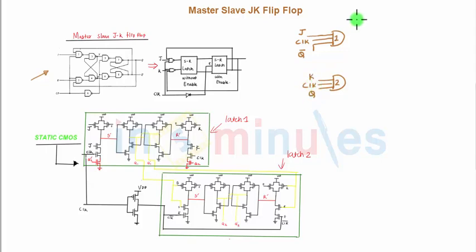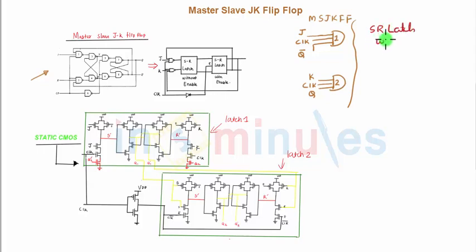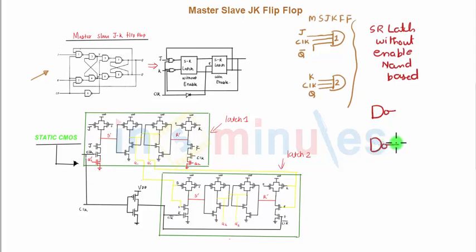This is going to be the first part of my master-slave JK flip-flop. Just remember this — we'll connect all these gates together and get the final diagram. The next part is an SR latch without an enable signal, NAND-based. It's a cross-coupled circuit. This output goes here and this is my second input. So this is part one of my diagram, and this is part two.